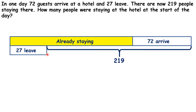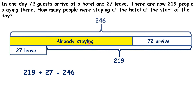How can we work this out? We can add 27 to 219 — you might need to use column addition for this — but that should give you a total of 246. So 246 people were guests at the hotel at some point.